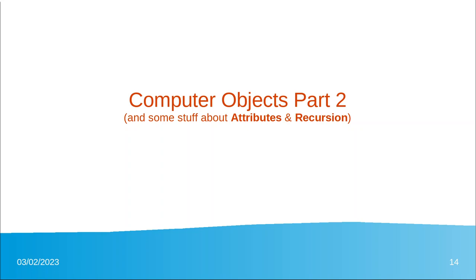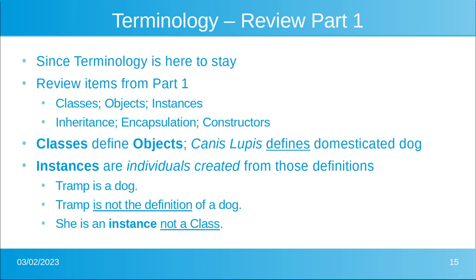Moving right along with our object-oriented programming introduction, this is part two. We're going to do a little bit of review and talk about attributes and recursion. Since terminology is here to stay and you can't read books or participate in this world without knowing the right terminology, we're going to review some of the items from part one.